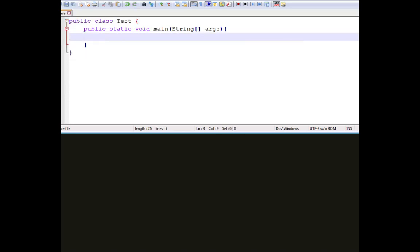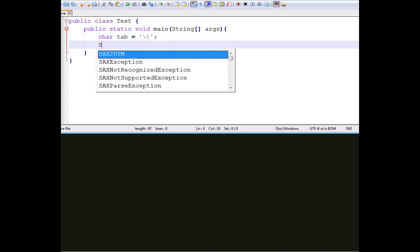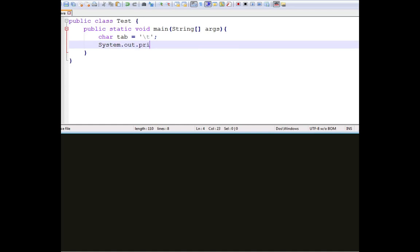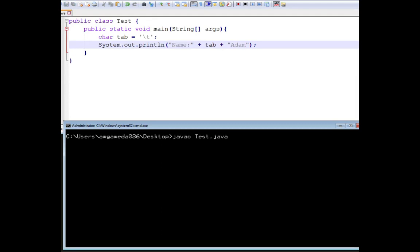So, again, char tab equals single character backslash t. Notice even it's kind of excited about this. System.out.println name. I don't even need that space. I'm so used to putting it in there. I don't even need it. Plus tab plus atom. I save this. Let's compile it up and let's take it for a ride.